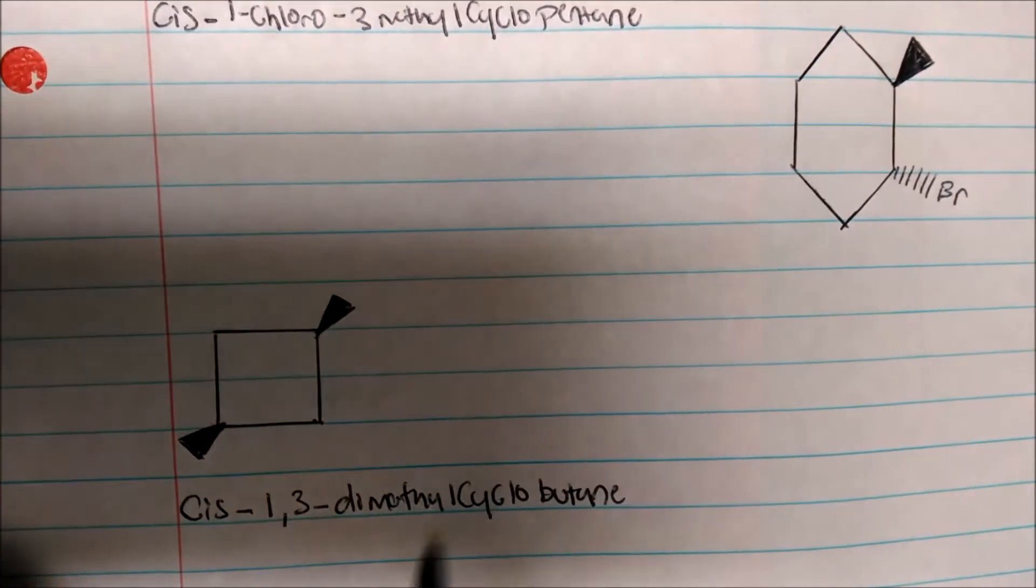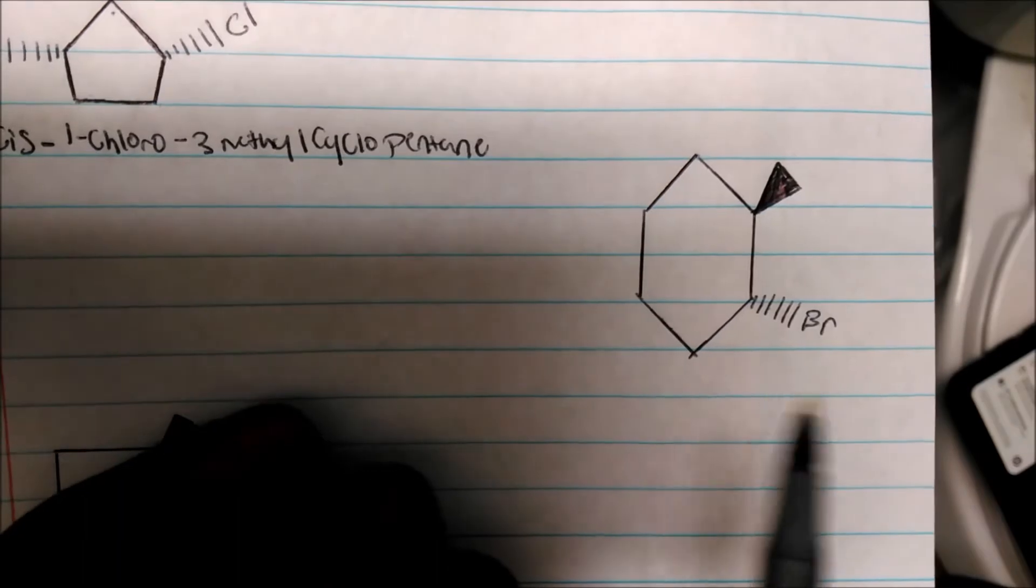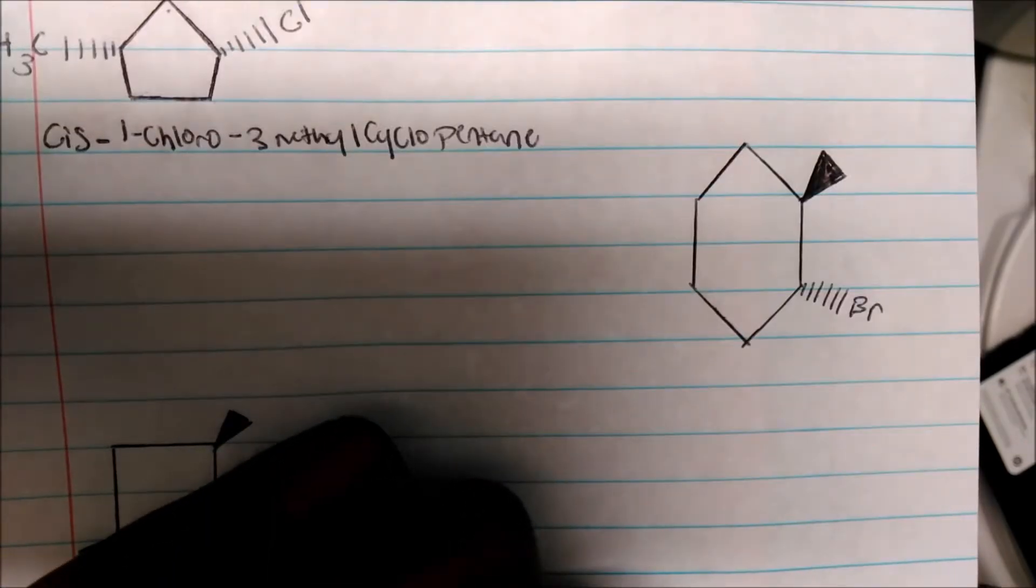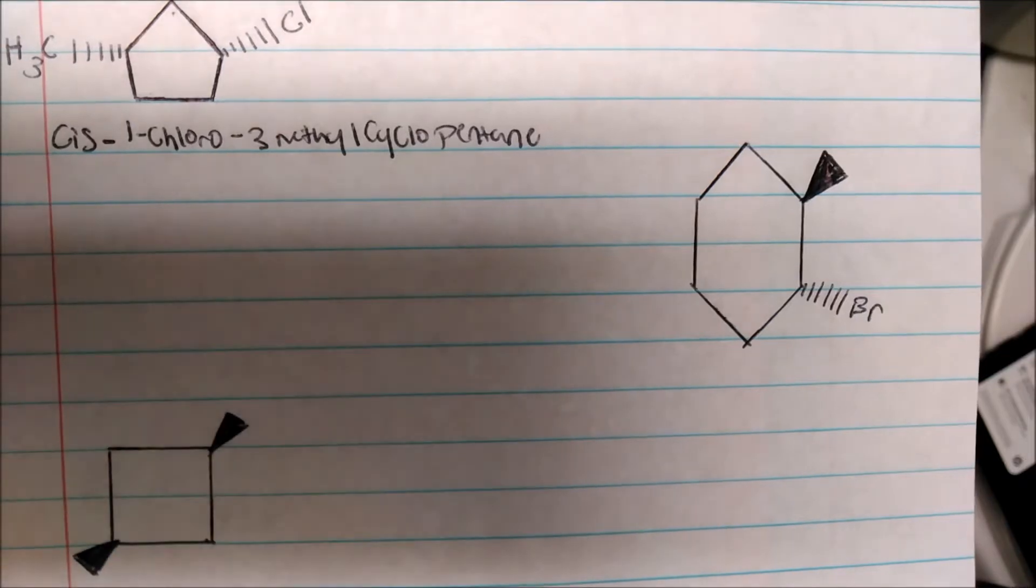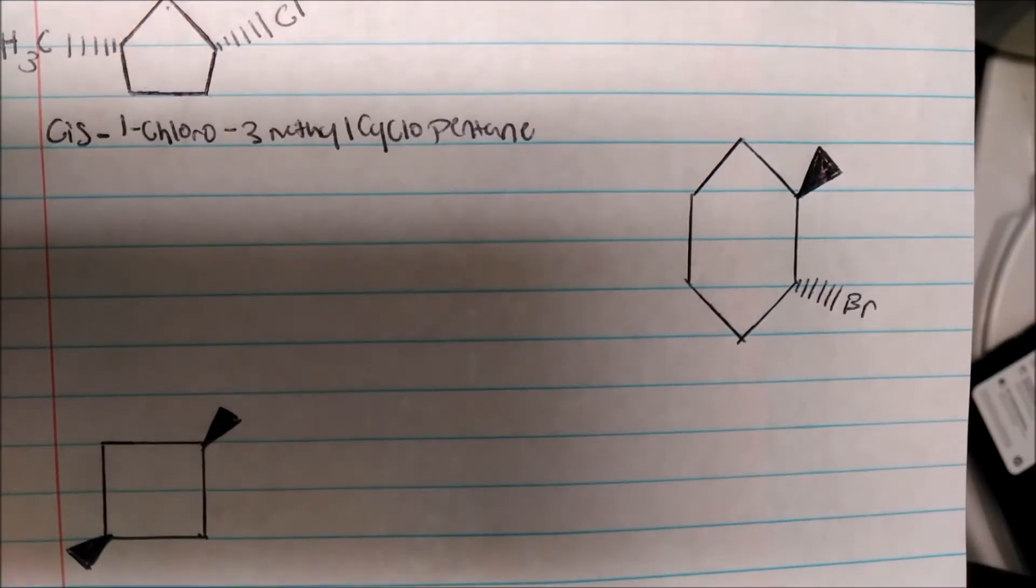All right. And that will be your name for this compound here. How about this one? All right. Obviously, now we could see that we have a methyl group that is coming out at us, and we have a bromine atom that is going away from us. So, immediately, we could see that this will be trans.